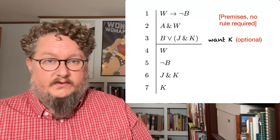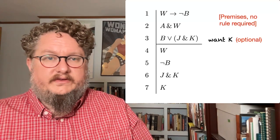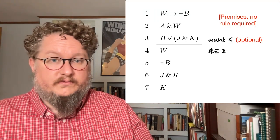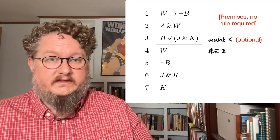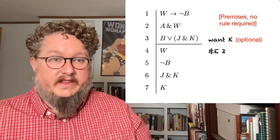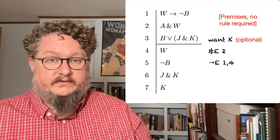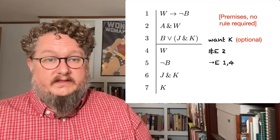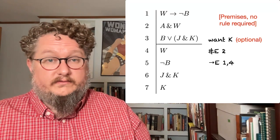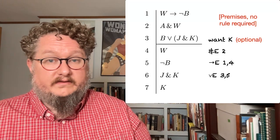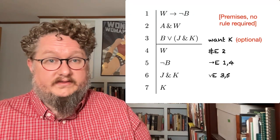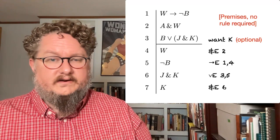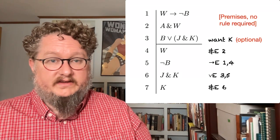Let's look at our proof. Line four is W. How can we get W out of our premises? You see on line two there's the conjunction A and W, so we can apply our conjunction elimination rule to get W. Now that we've got W and we have the conditional in line one — 'if W then not-B' — we can use that to get not-B using the conditional elimination rule. Then we have line six, J and K. This is something we can do through the disjunction elimination: line three is our disjunction and line five is the negation of the first disjunct, so we can get J and K. Another conjunction elimination applied to line six gets us K.